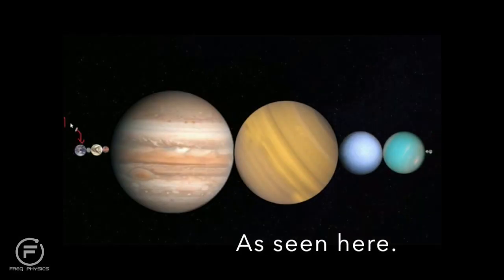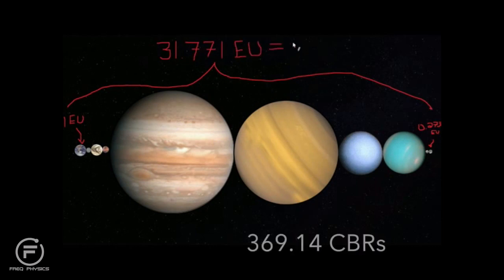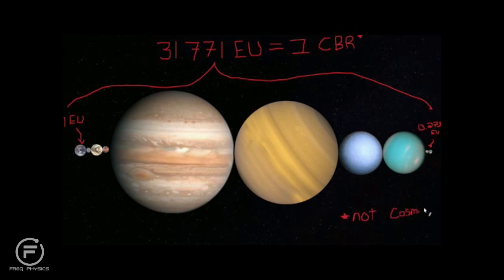Now, if we took what I'm going to call the celestial body ruler, CBR, not to be confused with the cosmic background radiation, it would take 369.14 celestial rulers to reach the Sun. How many kilometers it is to the Sun I leave as an exercise to the viewer.